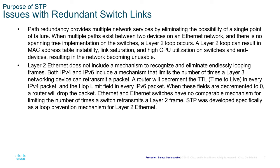That constant looping will create instability on MAC address or CAM tables, increase CPU utilization, and eventually lead to failure of the entire network. The Layer 2 Ethernet does not include a mechanism to recognize and eliminate endless looping frames, so it will keep doing this over and over again until it fails. Both IPv4 and IPv6 include a mechanism that limits the number of times a Layer 3 networking device can transmit a packet — but at the Layer 2 level, there is no such mechanism to prevent it.